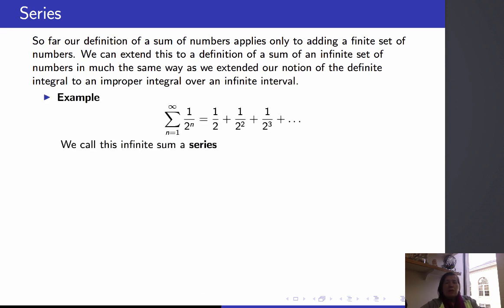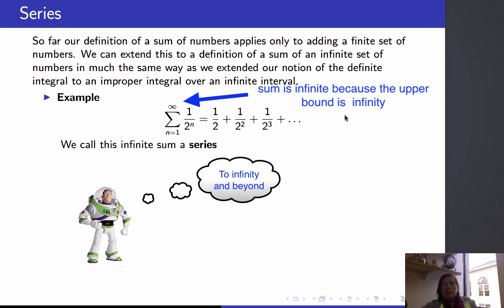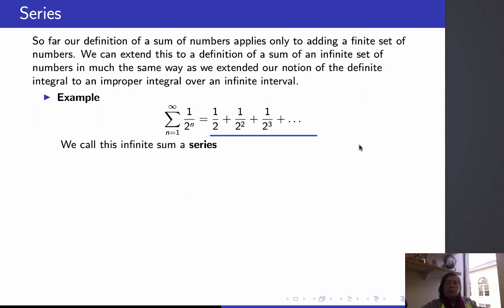Let's look at some notation first. This sigma is the capital S in the Greek alphabet — it denotes sum in mathematics. The sum from n equals 1 to infinity of 1 over 2 to the n means that we start with n equals 1: 1 over 2 to the 1 is 1 over 2, and we add that to 1 over 2 squared, 1 over 2 cubed, and we keep going with the 1 over 2 to the n's with no upper bound. This infinite sum is called a series.